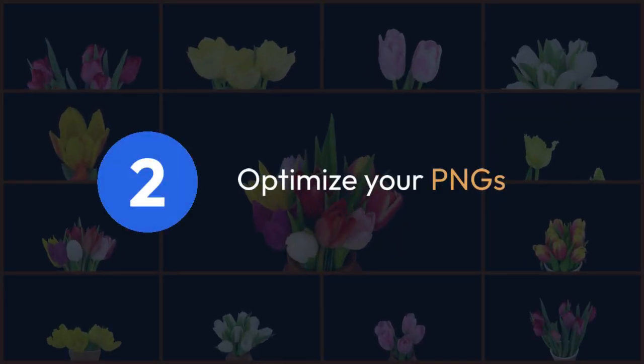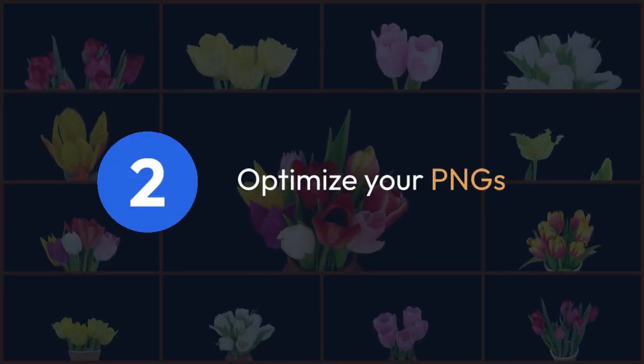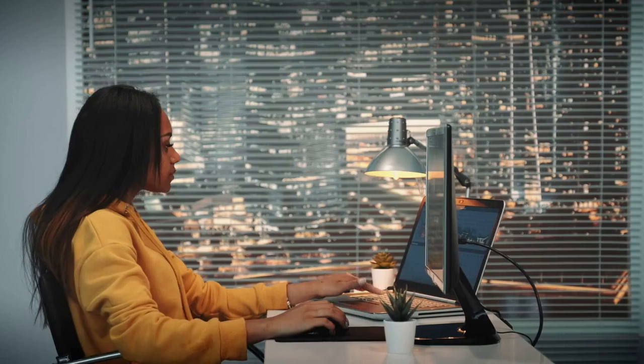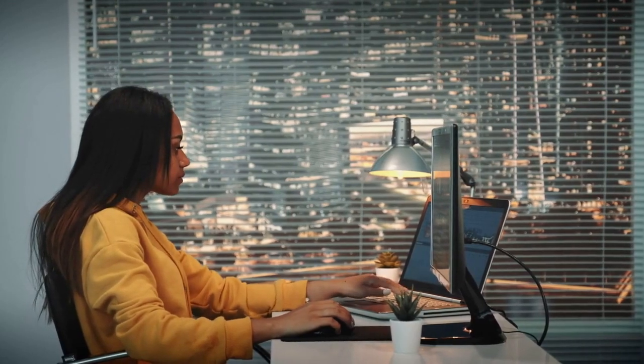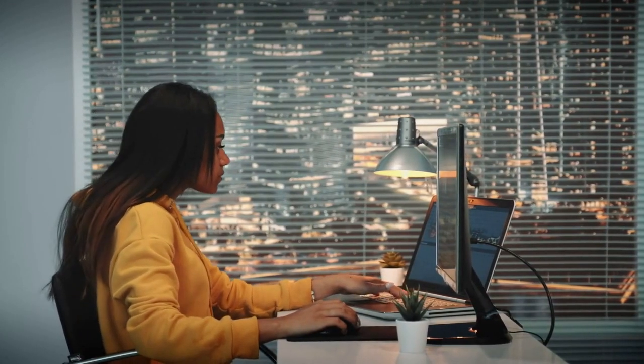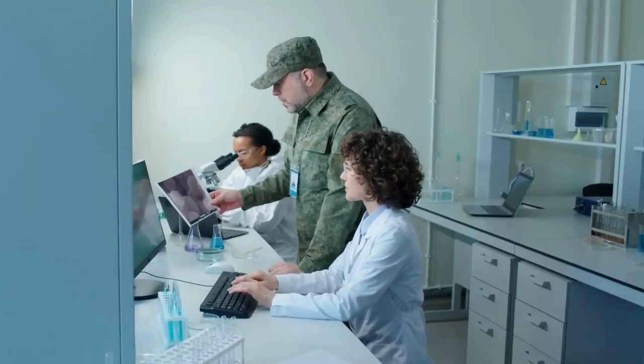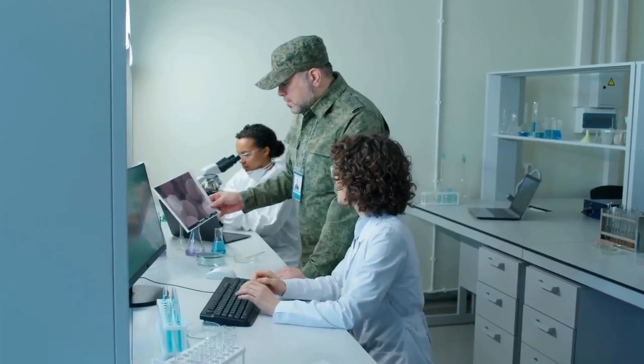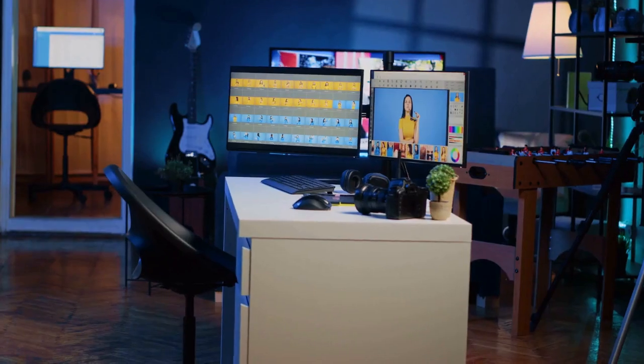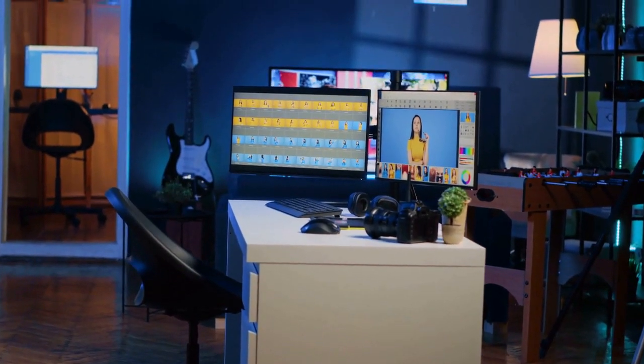Step 2 (optional, but recommended): Optimize your PNGs. GIFs often loop and having many frames can make the resulting sticker file very large. To reduce file size, you might want to reduce the number of frames in your GIF before conversion. Remove any redundant or overly similar frames. You could even consider slightly reducing the dimensions of each PNG to further optimize size. Many image editors, like GIMP or Photoshop, let you do this.